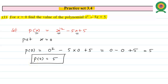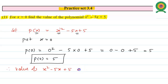Therefore, the value of the polynomial x² minus 5x plus 5 at x equals 0 is 5.